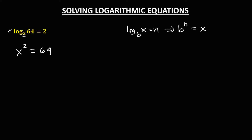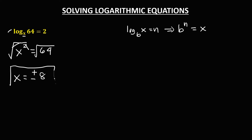Then to solve for x, just take the square root. So therefore x is equal — for the square root of 64, that's positive and negative 8. So x is equal to positive and negative 8.